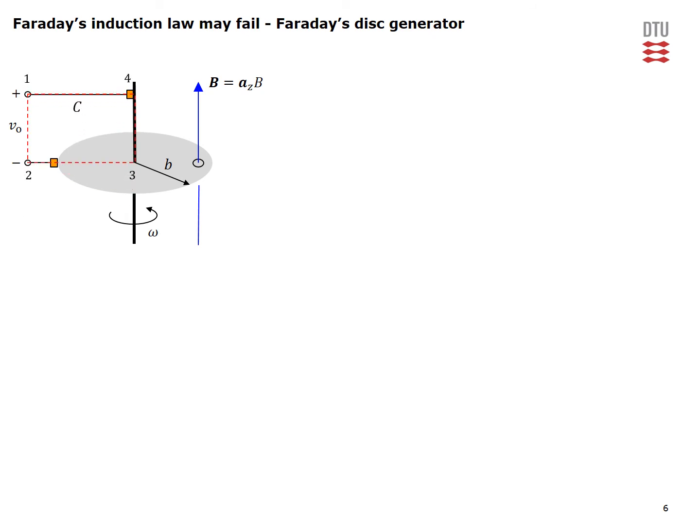An obvious path to consider is a rectangular path. Integrating the electric field intensity along this path gives the induced electromotive force. However, as the disk rotates, there is no magnetic flux through the surface bounded by this path C, and thus no changing flux through it. Faraday's induction law therefore tells us the open circuit voltage is zero — which is of course not true for the Faraday's disk generator. This shows that Faraday's induction law fails for this particular curve.